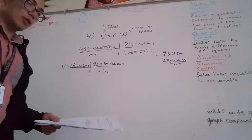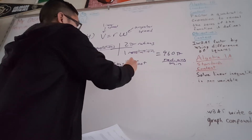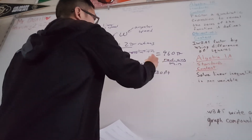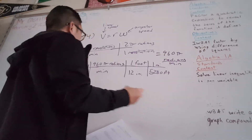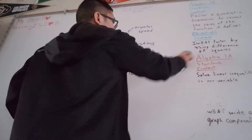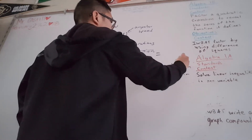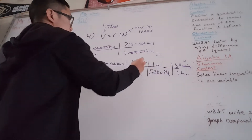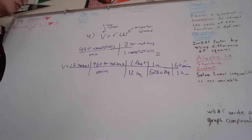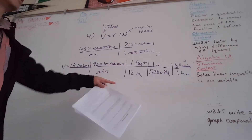They do want it in miles per hour though. So I have to convert this into miles per hour. There is one foot has 12 inches, and there are 5,280 feet in one mile, and then I have to convert to hours too. So there are 60 minutes in one hour. My minutes cancel, the feet cancel, the inches cancel. The radians we don't really include with the units.